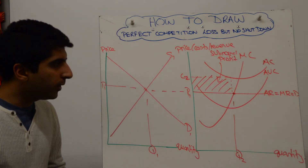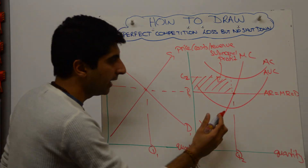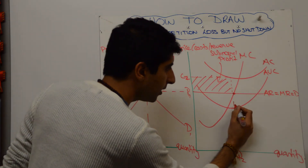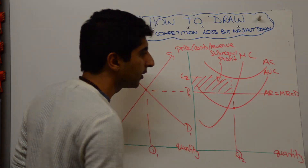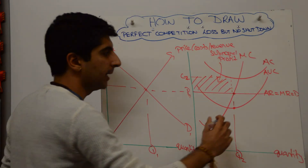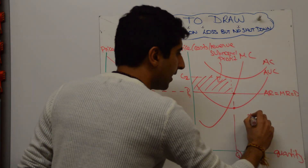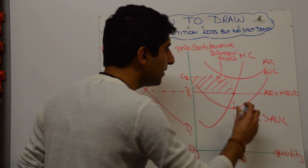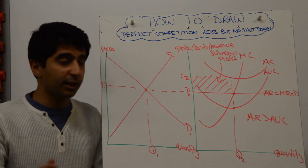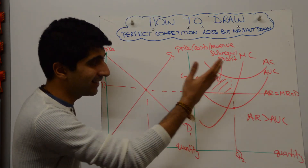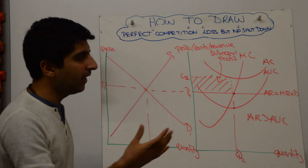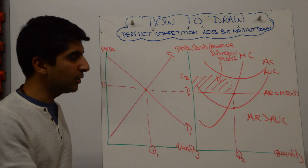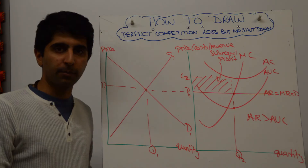At quantity level Q2, the average variable cost is at this point — the red dot. What we're showing here is that AR is greater than AVC. So even though they're making a subnormal profit — a loss because AR is less than AC — AR is still greater than AVC, therefore it's worth continuing because the shutdown condition has not been met.